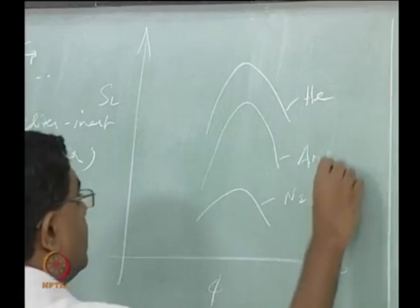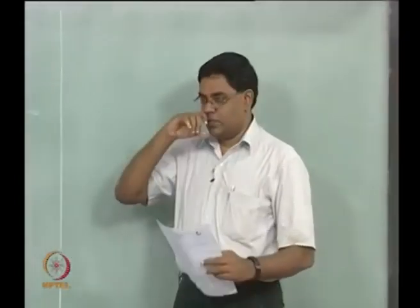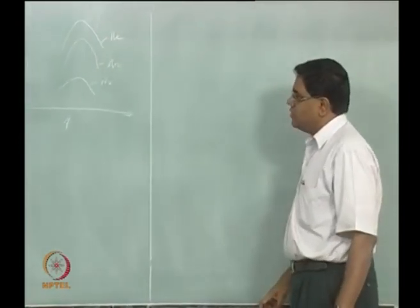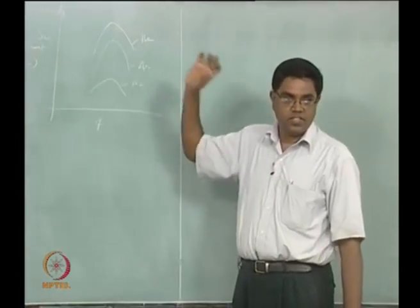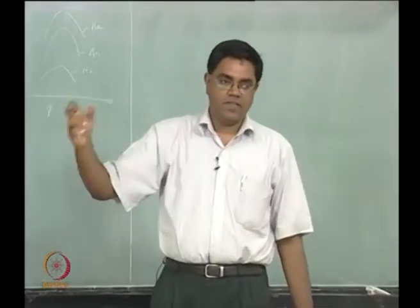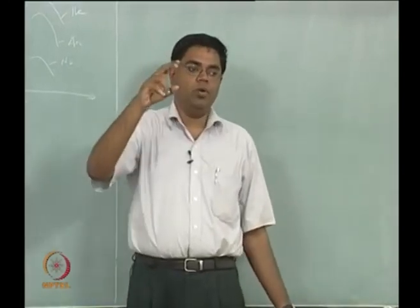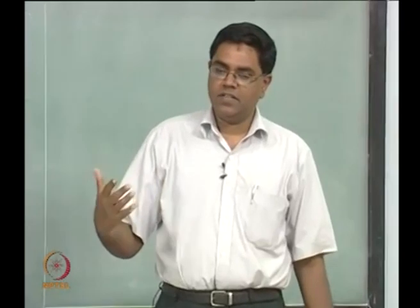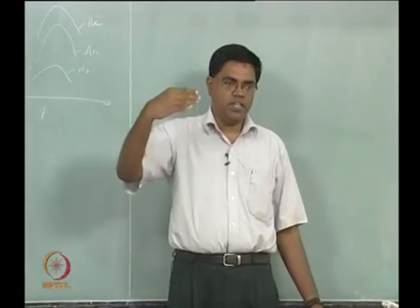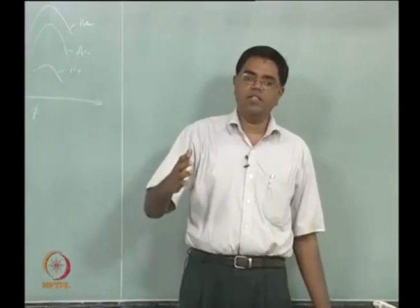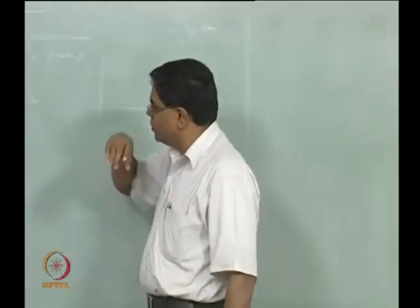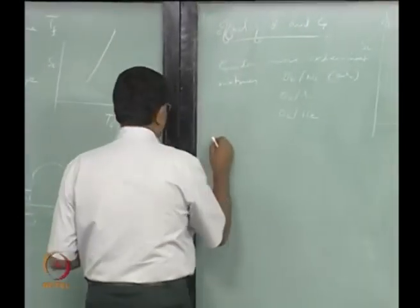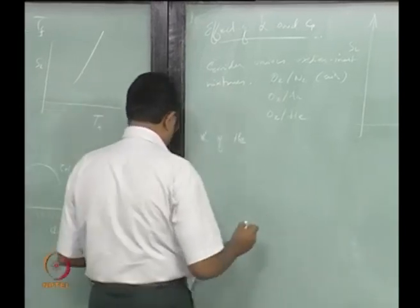Argon and helium are both inert monatomic gases, so their CPs are nearly the same. The only thing that differs is the density, and therefore α changes while CP does not. SL goes as (1/ρ0) × √(kW/CP), so k/(ρCP) is α. Because helium is lighter than argon, for the same CP, α for helium is much larger than for argon. You can fix your flame temperature — it is nearly the same since CP is the same — and with the same flame temperature, higher α means higher SL.